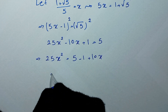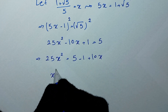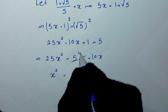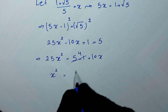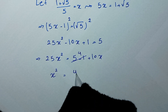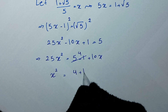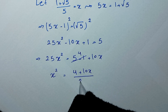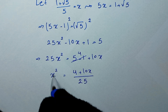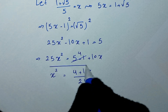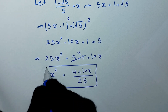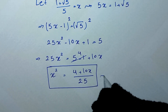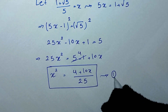So here it will be x squared, and here this is equal to 4 plus 10x over 25. We label this as equation 1.